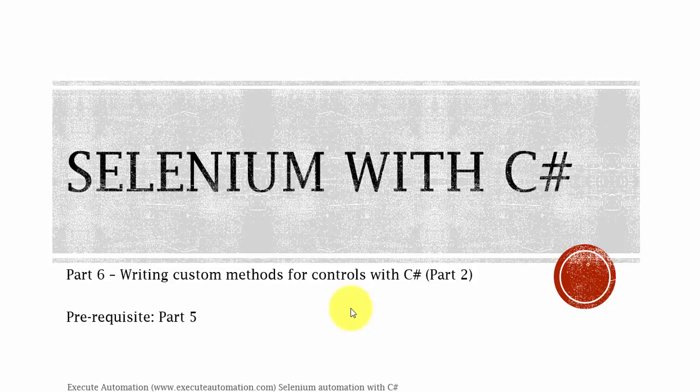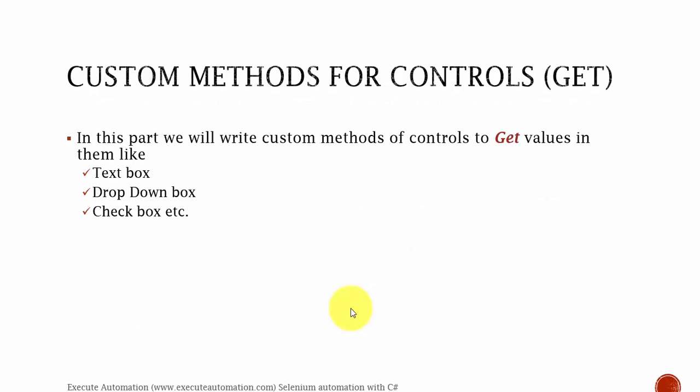Hey, hello guys, this is Karthik from ExitAutomation.com and this is part 6 of our Selenium Automation with C Sharp. In this part we are going to write some custom methods for controls with C Sharp - this is part 2 of this series. Before watching this part I would request you to watch part 5, since this part is a continuation. We are going to write custom methods to get a value out from controls like textbox, drop down box, or checkbox. In the last video we saw how to set values into controls, and here we are going to get values out. So let's flip to Visual Studio.